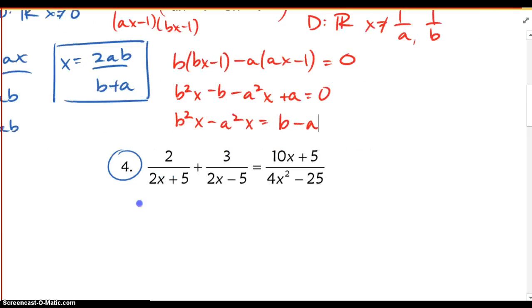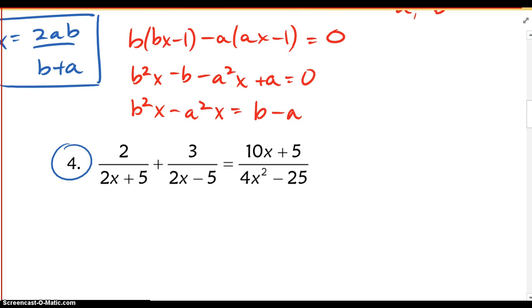Now, step 3 here tells me that I should factor. So I'm going to look over here. I'm going to factor out the x, and I'm left with x times b squared minus a squared, equaling b minus a. Now, if I want to isolate the x here, I can simply divide out.